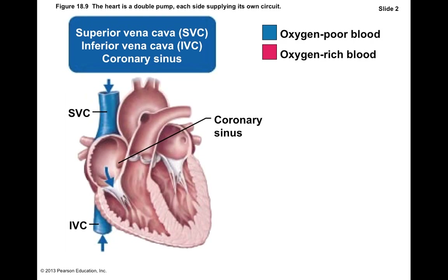These next slides take us through blood flow of the heart. Starting from the vena cava: blue means deoxygenated blood. The right atrium receives blood from three places — the superior vena cava, which drains blood superior to your respiratory diaphragm; the inferior vena cava, which drains blood inferior to your respiratory diaphragm; and the coronary sinus, which drains blood from the coronary veins of the heart itself. So the right atrium receives blood flow from three different areas.